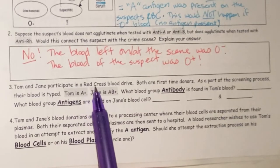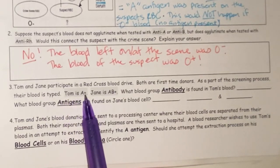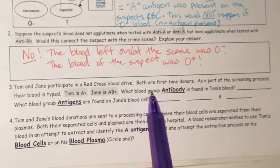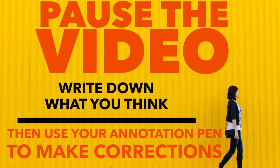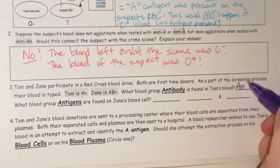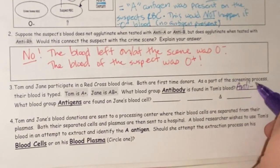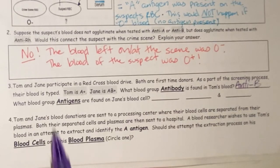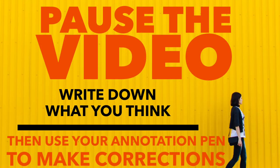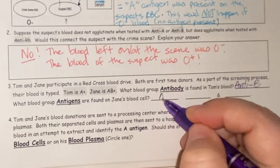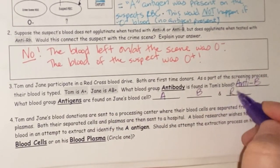Question three: Tom and Jane participate in a Red Cross blood drive. Tom is A positive, Jane is AB positive. What blood group antibody is found in Tom's blood? Because Tom is A, he must be against B — so anti-B antibody. What blood group antigens are found on Jane's blood cell? Since Jane is AB positive, she has the A antigen, the B antigen, and RH for the positive.